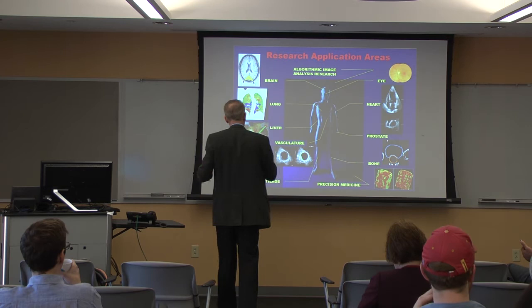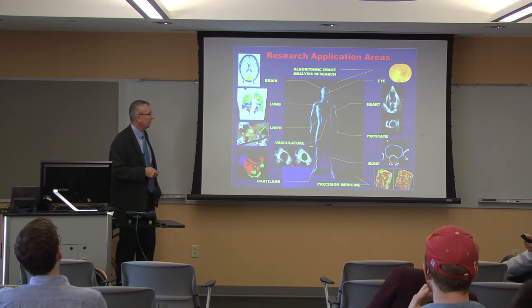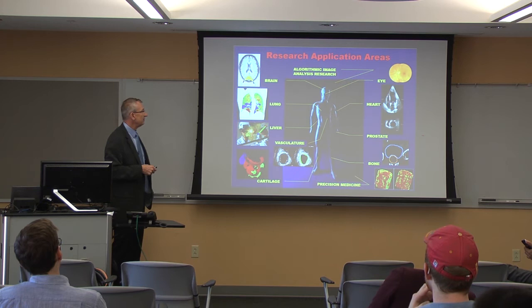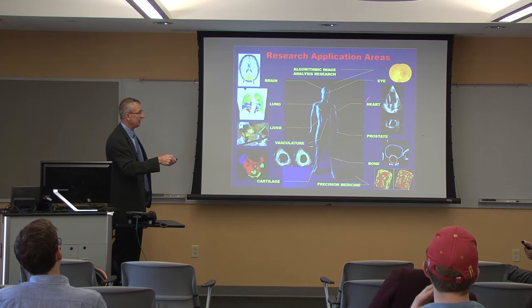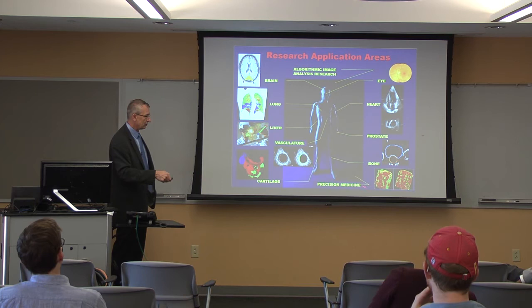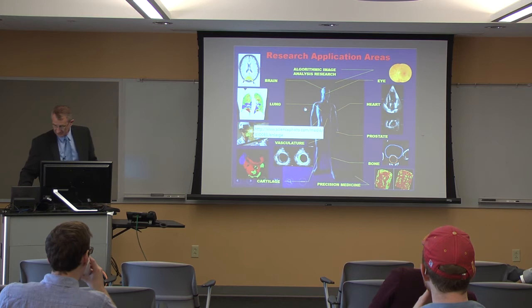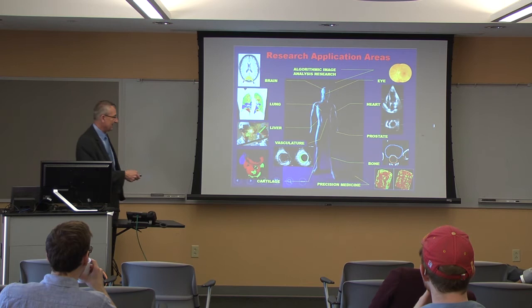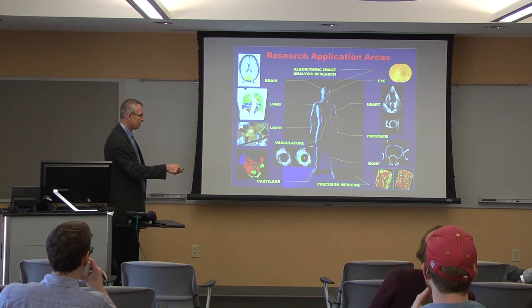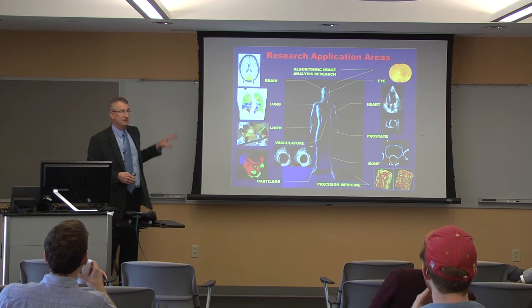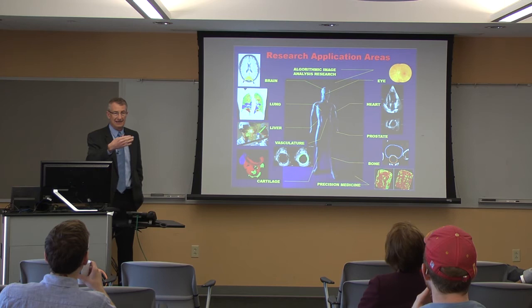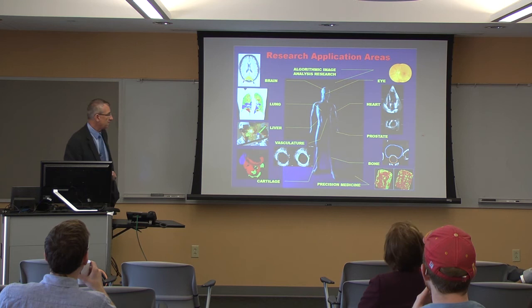Getting back to the Iowa Institute for Biomedical Imaging — we work in a variety of areas: brain imaging and brain image analysis, pulmonary imaging, the eye, the heart, the prostate for cancer treatment, and orthopedic imaging for osteoporosis, osteoarthritis, and cartilage assessment. We also work on coronary vessels where colors represent different tissue types. In all those cases, you get standard clinical-level image acquisition and then add additional information based on image analysis.